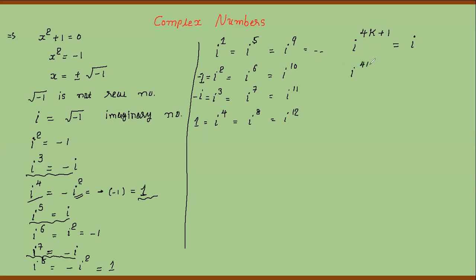If the power is of type 4k+2, like 2, 6, 10, then the value is -1. If the power is of type 4k+3, like 3, 7, 11, then dividing by 4 gives remainder 3, so iota^(4k+3) = -iota. And if the power is a multiple of 4 — that is, remainder 0 — then the value is 1, where k is an integer.